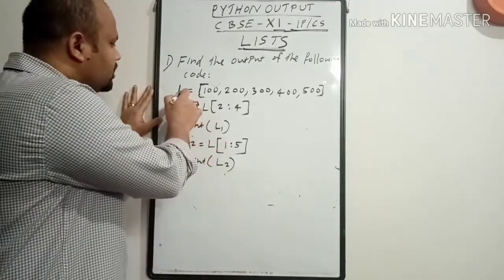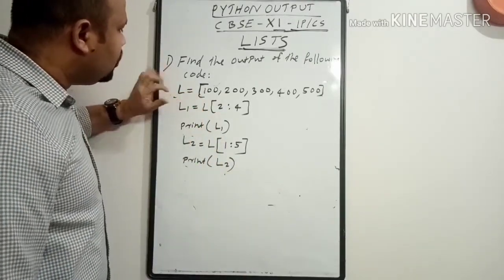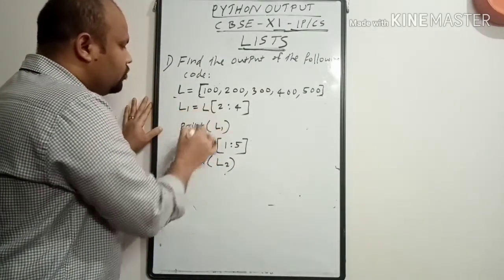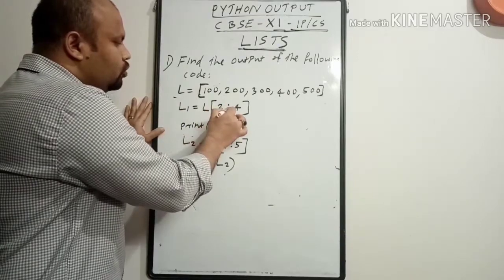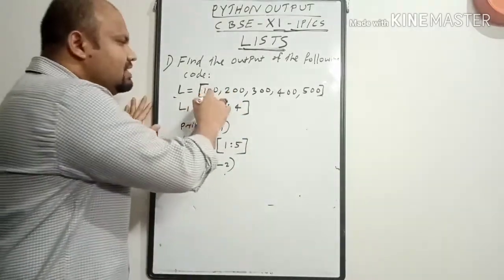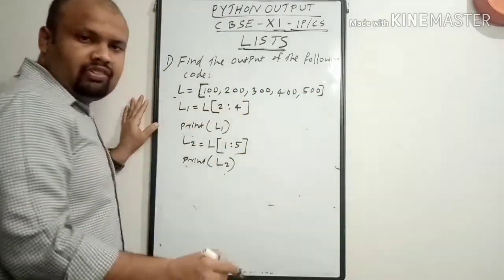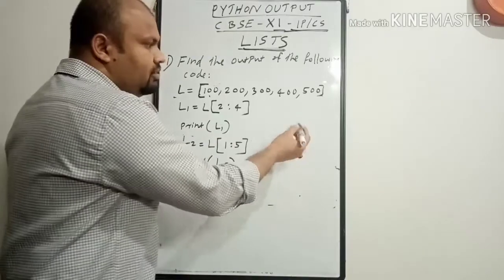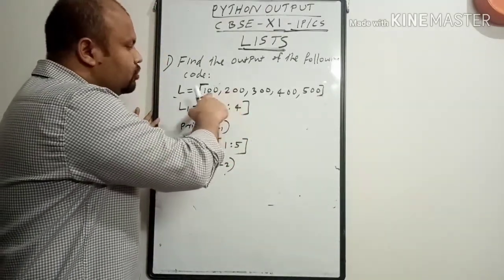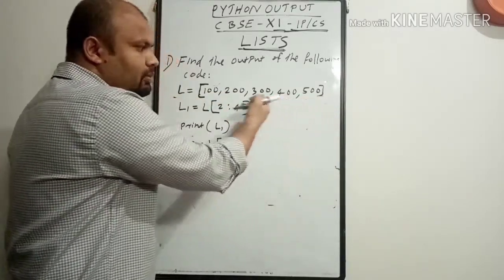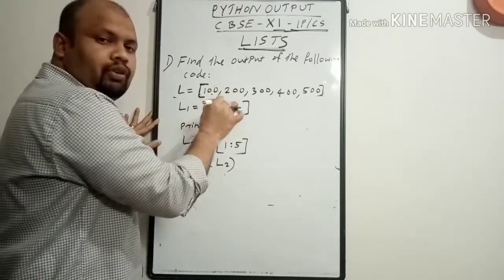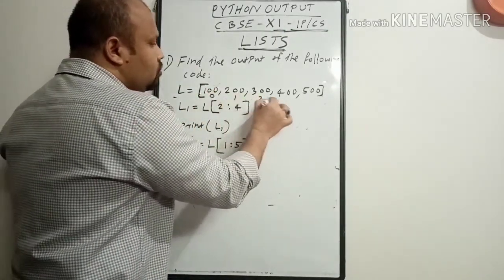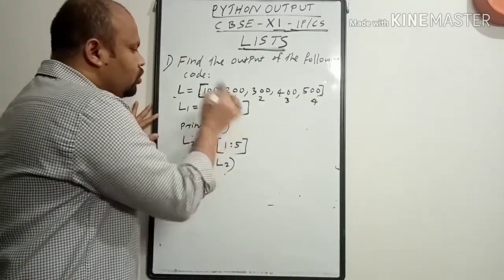So that's all about list. First, L = [100, 200, 300, 400, 500] is the list declaration. Then L1 is declared as L[2:4]. You have to understand that each and every list element has its own index. In a list there are basically two types of index: one is positive index and the other is negative index. The positive index starts from left to right and the negative index starts from right to left. Marking the positive index here: 0, 1, 2, 3, 4.